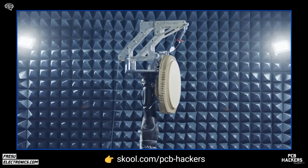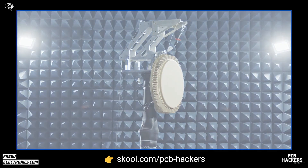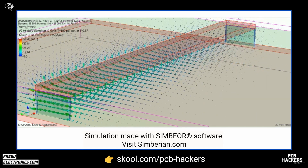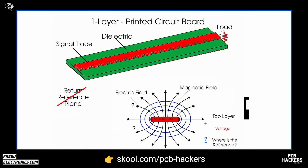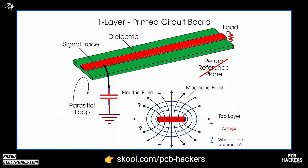During EMC tests such as radiated and conducted tests, what we are measuring is the energy level of the fields. The quickest way to encounter EMC issues is to remove the return reference plane from the vicinity of the signal trace. This allows the fields to expand and create disruptions in undesired locations. When this is done, the electric fields are no longer confined and can extend, possibly reaching other devices or component structures. When this occurs, the return current loops formed through parasitic paths will also grow, causing an increase in magnetic fields that can further disrupt operations.